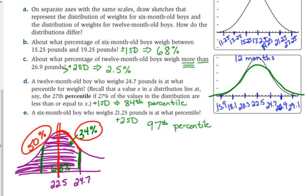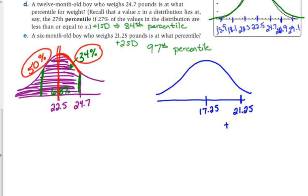So similarly, if we're asked about a six-month-old boy who weighs 21.25, we're looking at the other distribution now. 17.25 is our mean. 21.25 is two standard deviations above our mean.